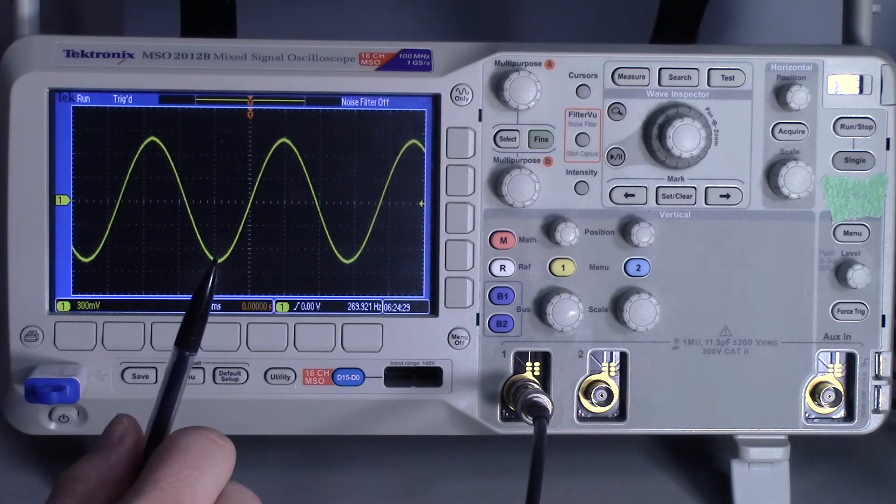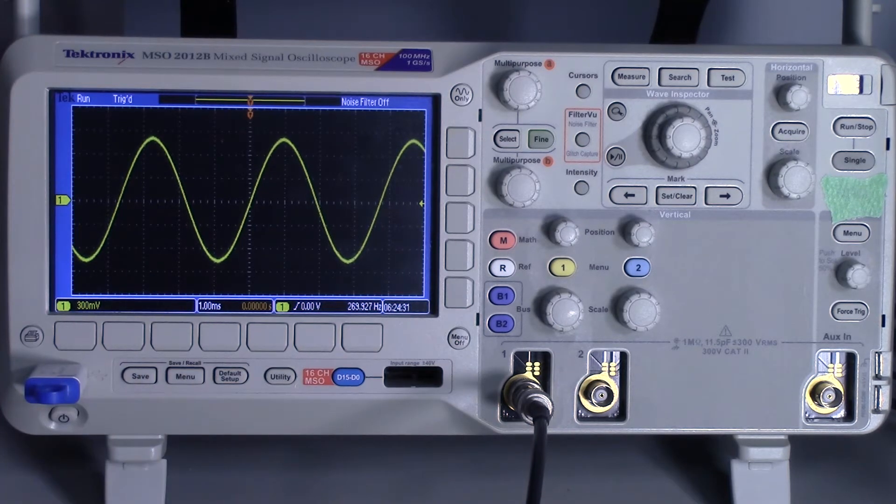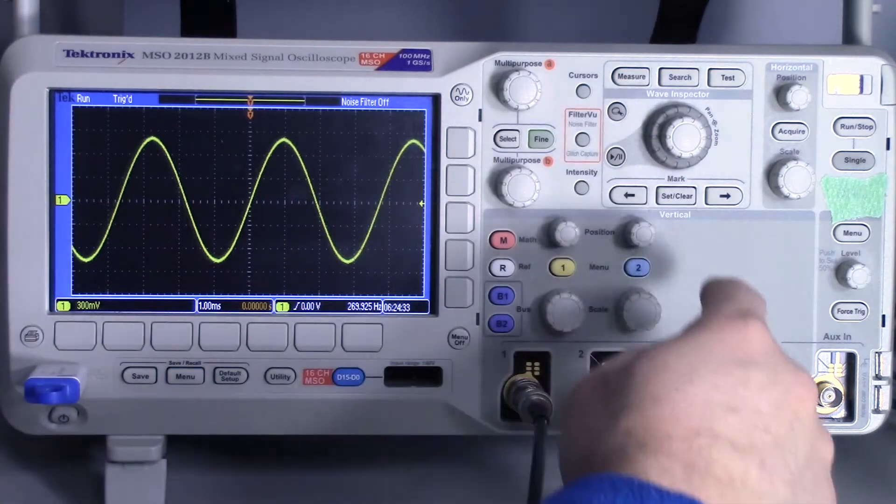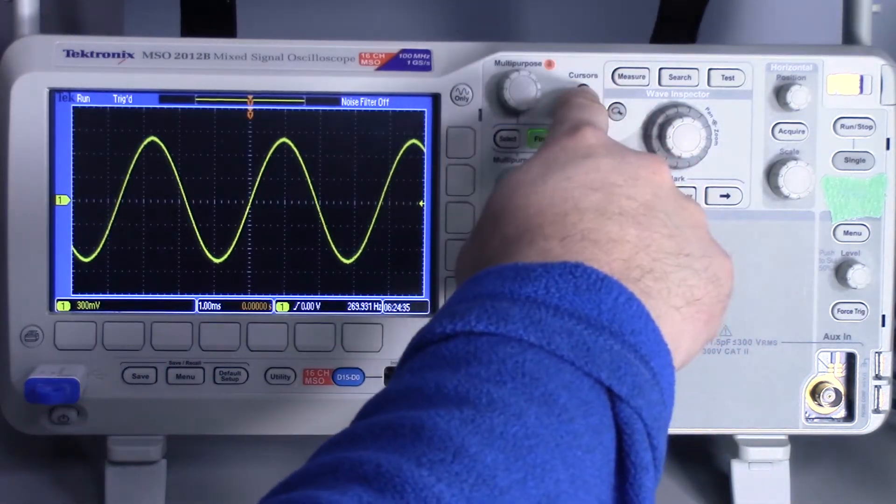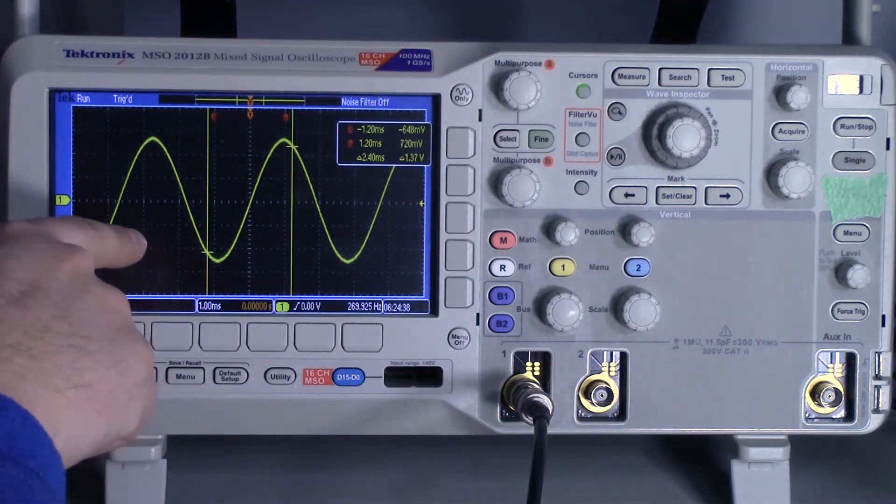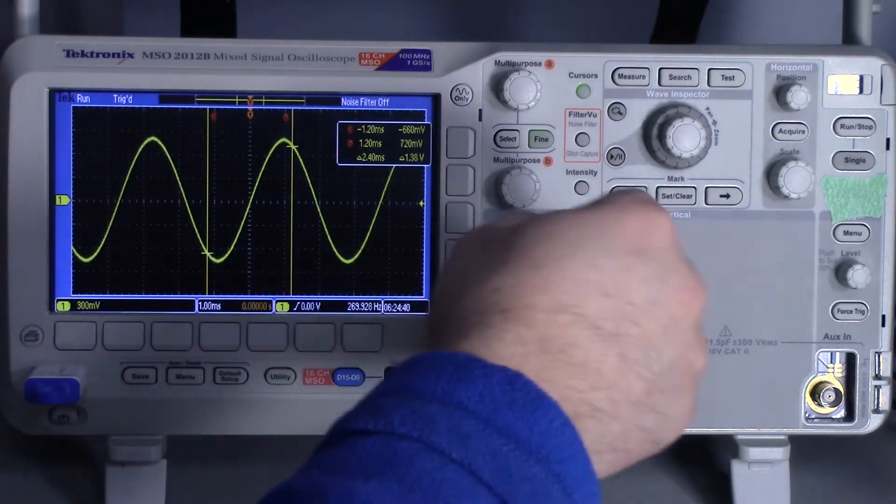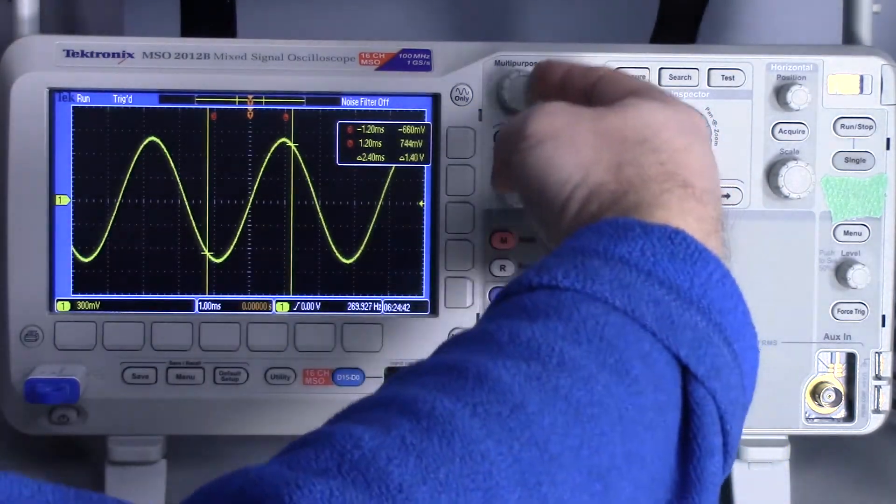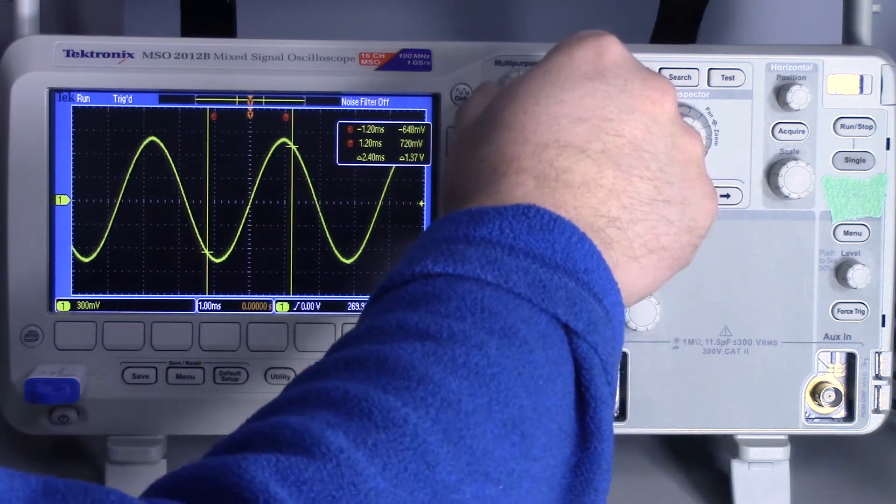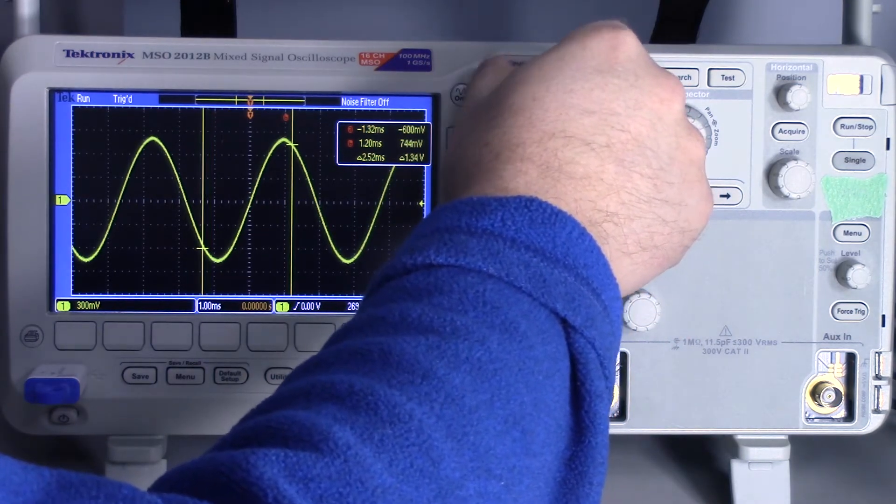But one of the ways that's very useful in measuring all kinds of things is to use the cursors. So we're over here, we're just going to press this button. So that brings up the cursor. So the default is to have these two vertical bars. And this is where we'll use the multi-purpose knobs. And so this is going to be A.